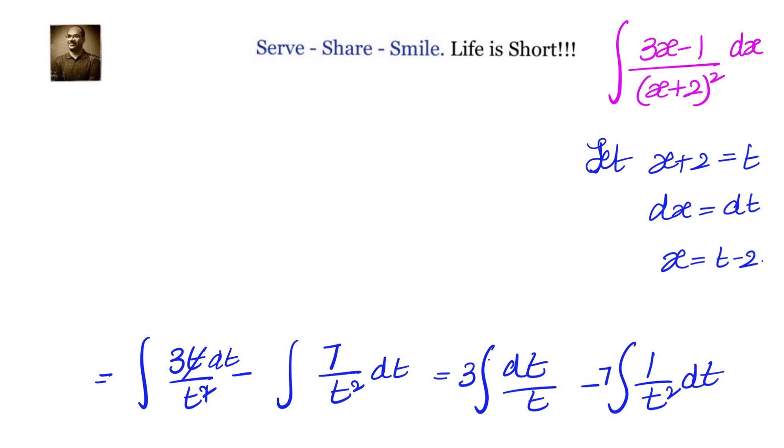So let us substitute those values here. We will have this equal to 3 into integral of 1 by t. Integral of 1 by t square is minus 1 by t, so that will become 7 into 1 by t plus c.